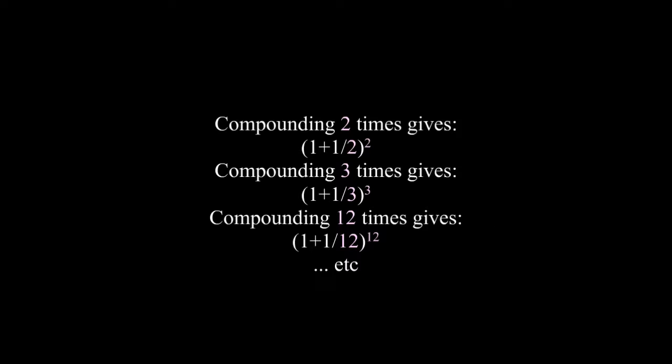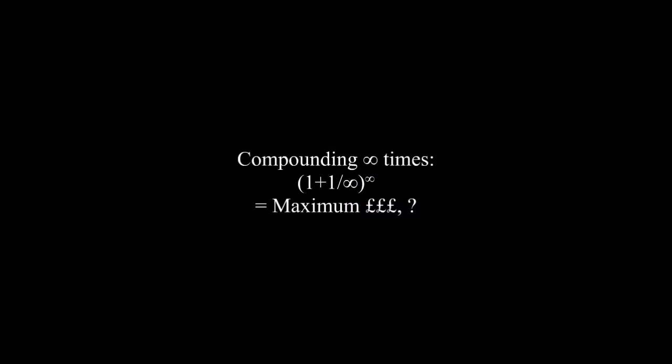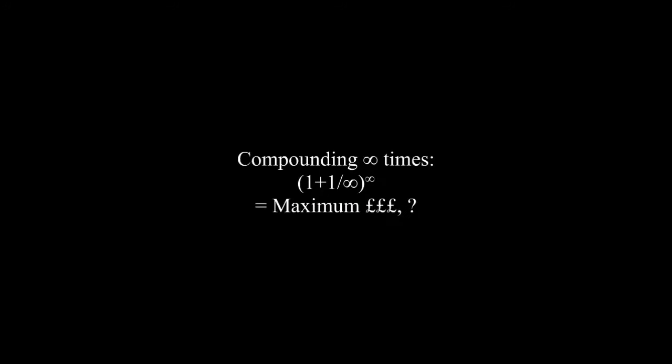In general, splitting up into n segments would yield 1 plus 1 over n to the power of n amount of cash in the bank account. Pause if you need time to understand. There's something interesting here. The more times we split, the more money we get despite having the same 100% interest overall. If we split this interest into infinitely many pieces, then we will have the maximum amount of money in the bank account in the end. This amount of money is the number e.